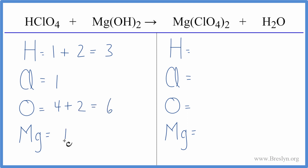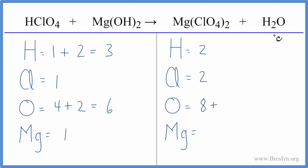On the product side, we have two hydrogens. We have two times the one chlorine — that gives us two of those. Two times four is eight oxygens, plus we have one oxygen here, so we have a total of nine oxygens. And then magnesium — we have one of those.